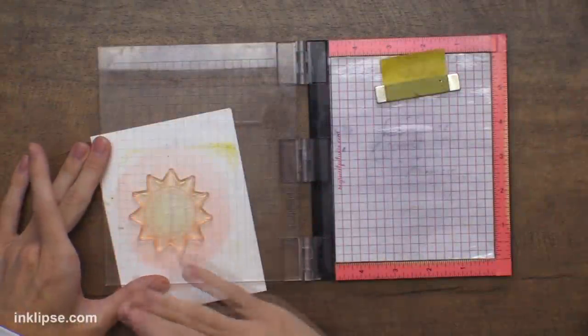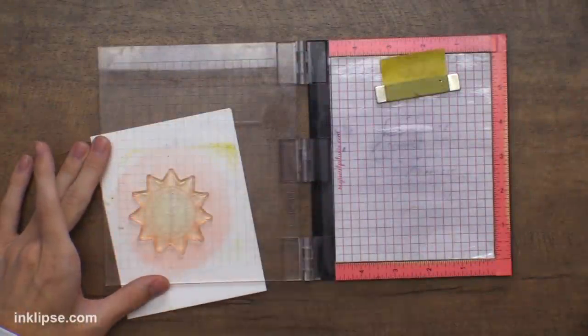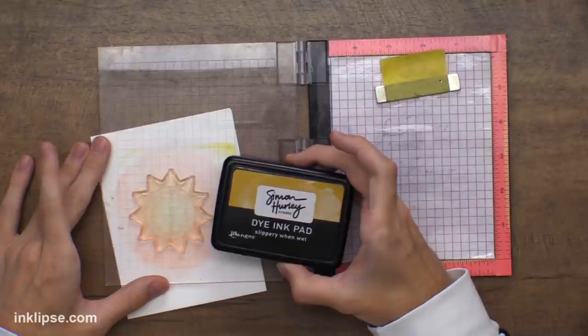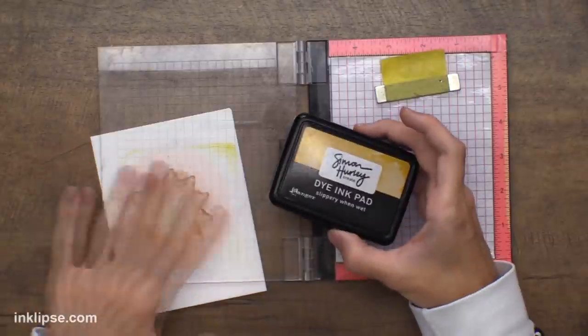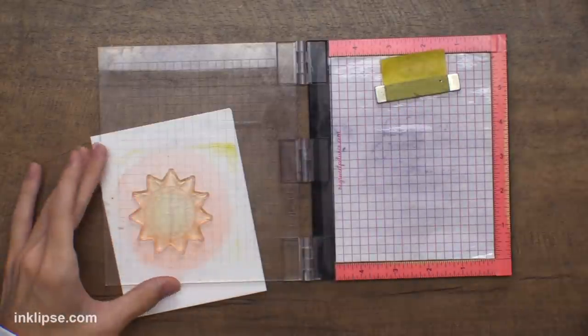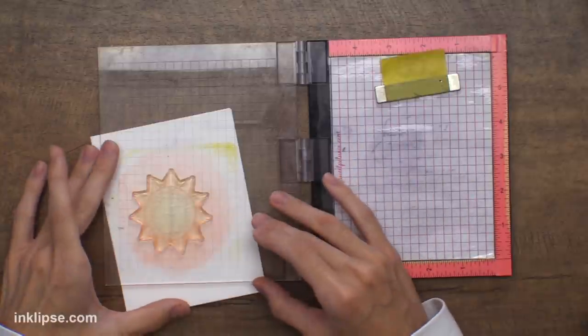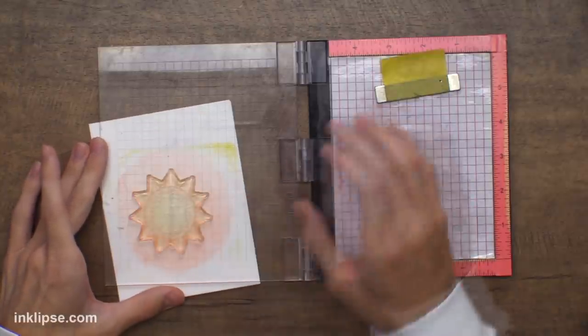The first thing I wanted to share is from one of my most recent videos. It was in my MISTI stamping tool and I used some Simon Hurley Create dye inks to stamp with my image here. So it's not too dirty and I don't want to use a super harsh cleaner on it because sometimes that can harm your stamps as well.